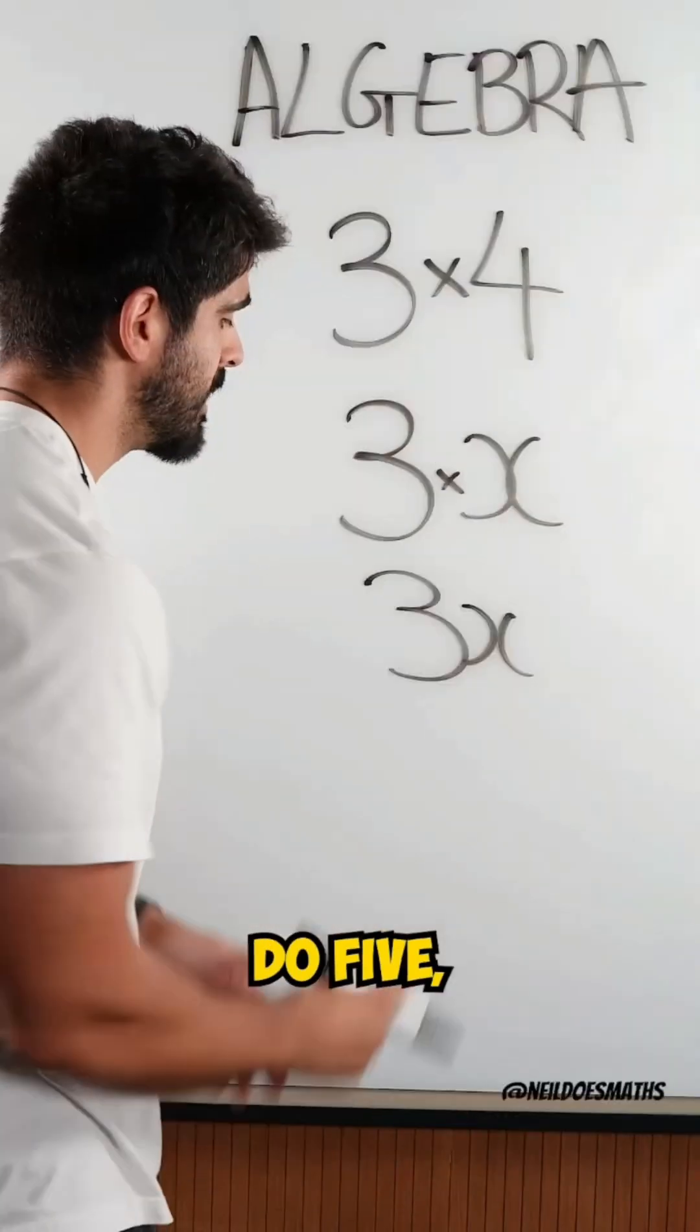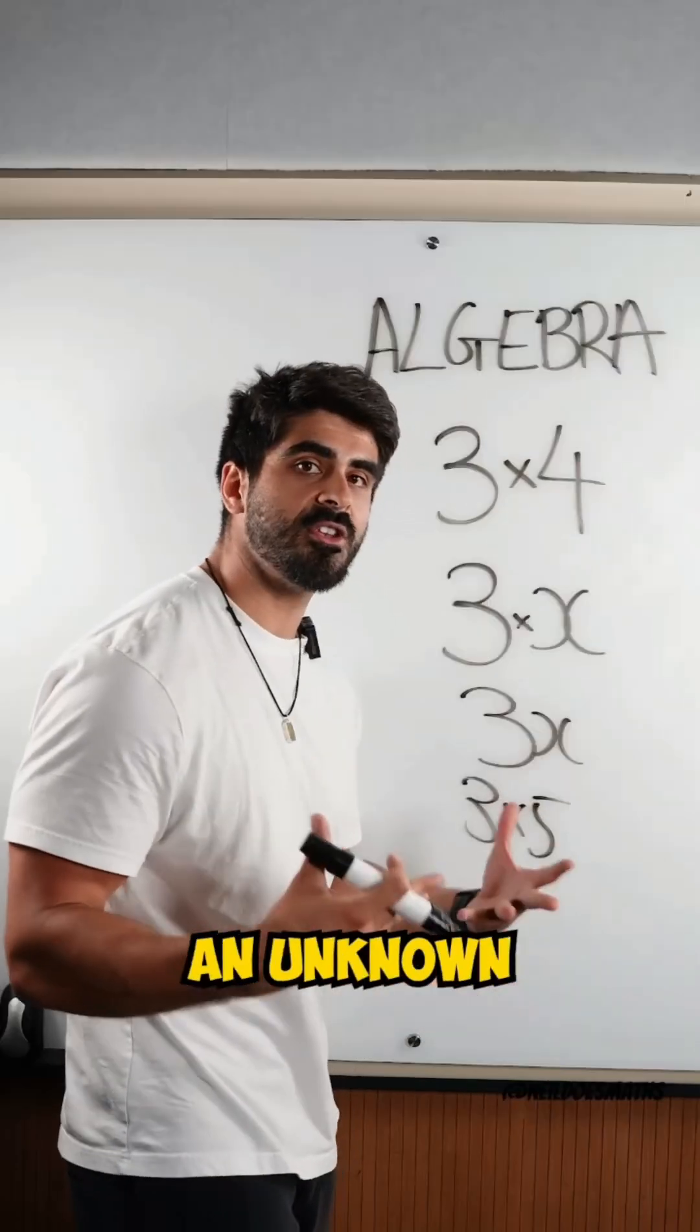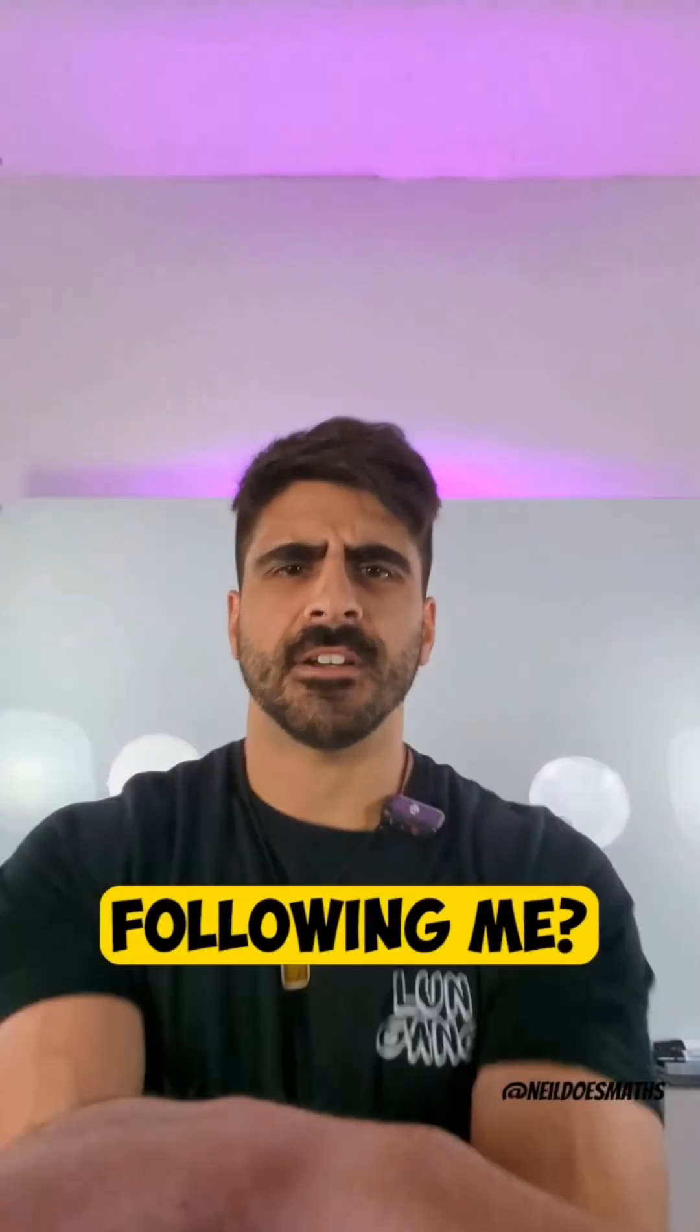How about if I wanted to do 5? I would have x is 5 and it would change to 3 times 5. So x is an unknown which can change depending on the situation. Why aren't you following me? Do it.